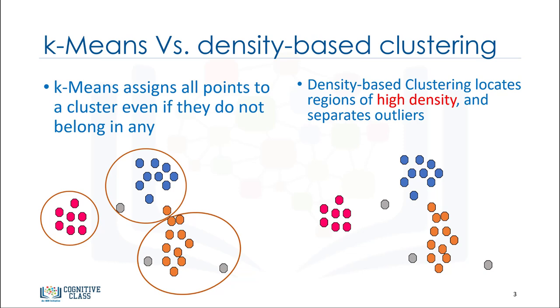In the domain of anomaly detection, this causes problems as anomalous points will be assigned to the same cluster as normal data points. The anomalous points pull the cluster centroid towards them, making it harder to classify them as anomalous points.